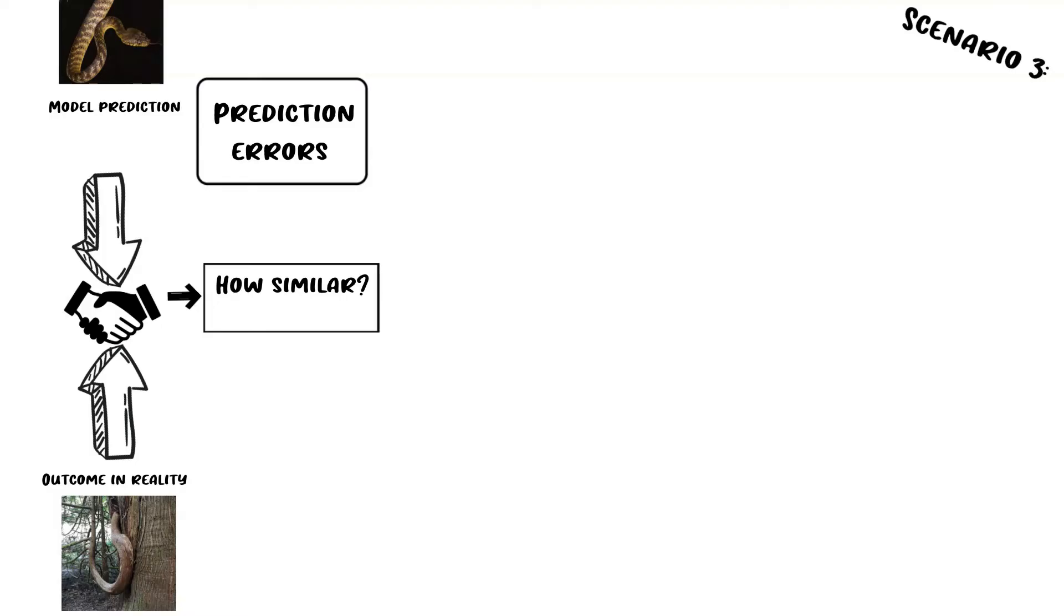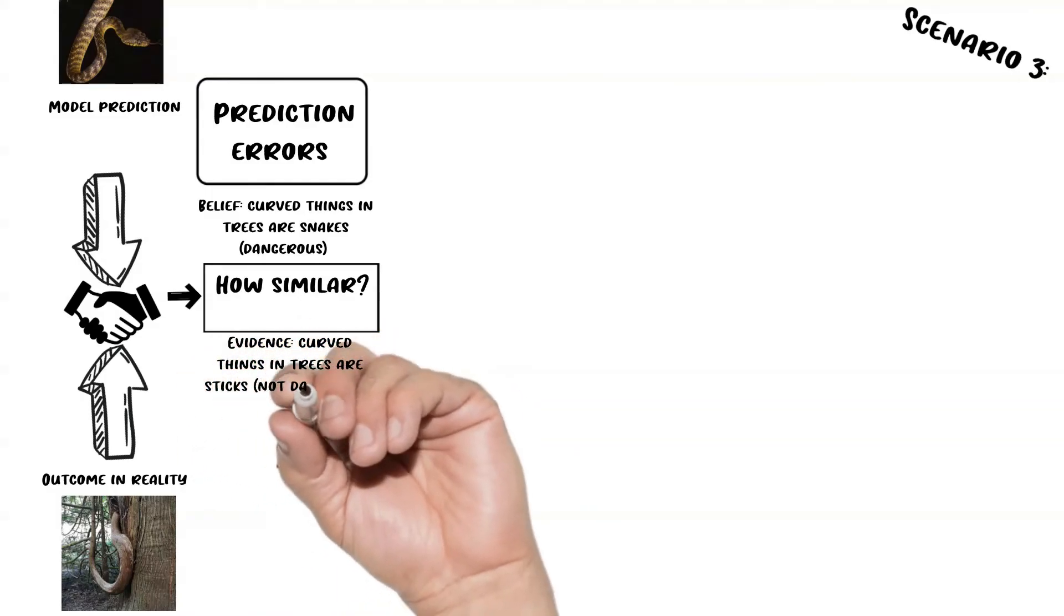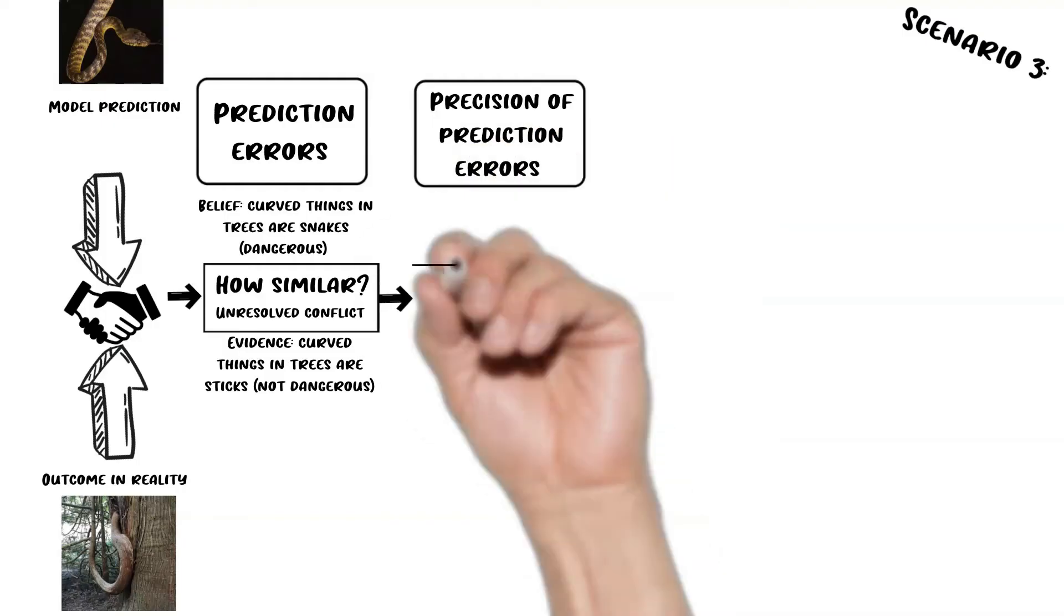First, let's go through what happens during the handshake. Your brain asks: How similar are my predictions and what I'm experiencing in reality? The top-down models predict that curved things in trees are snakes and thus are dangerous. Clearly, we have an unresolvable conflict, so we move on to the next step.